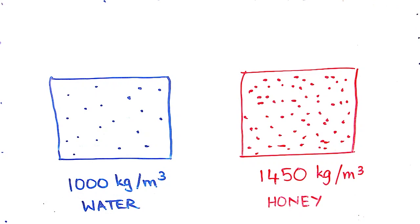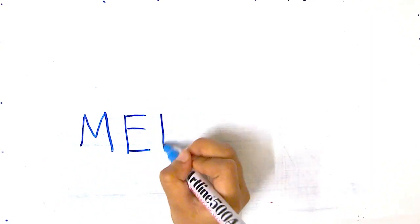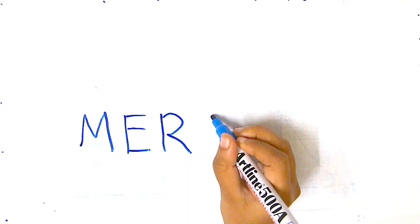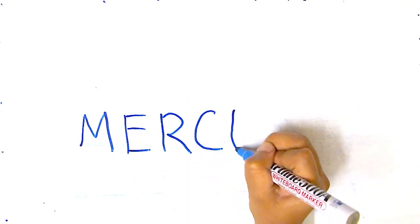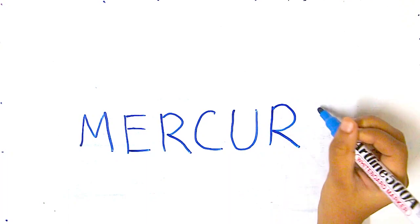At this point I'd like to share a very interesting fact. Do you know what the heaviest liquid known to man is? Mercury. Mercury is actually a metal, and although metals are typically solids, mercury at room temperature exists as a liquid.